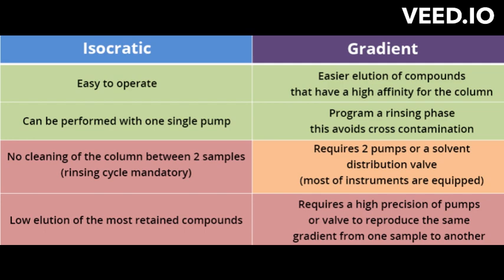In summary, isocratic HPLC uses a constant composition of the mobile phase throughout the separation process, while gradient HPLC uses a varying composition of the mobile phase throughout the separation process.